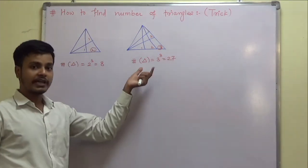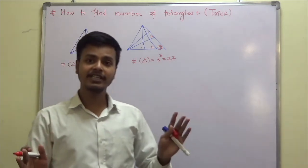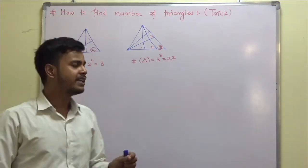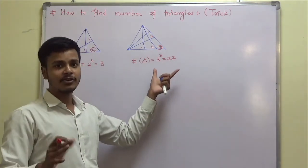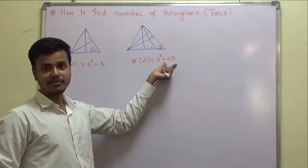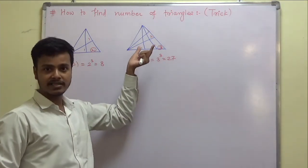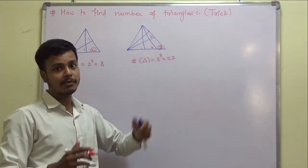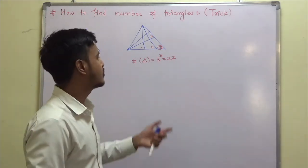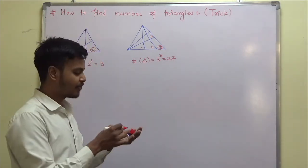If you are going to find out the number of triangles manually, 99% of students are not going to get 27 because they might miss one or they might have counted the same triangle twice. This is why this trick is very important.